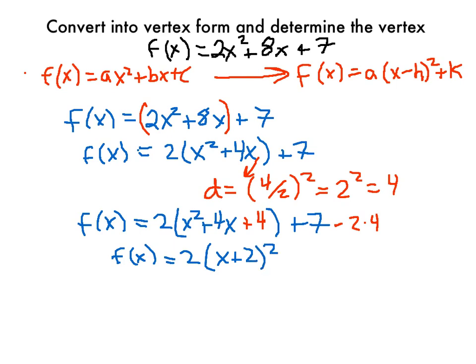So now, remember this is a perfect square trinomial. We can write as x plus 2, that quantity squared. And now whatever's left here to do is just some small simplifying. We get f of x equal to 2, x plus 2 squared, 7 minus 8 is a minus 1. And now this is in vertex form.